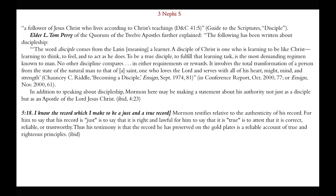Chapter 5, verse 18 — the phrase 'I know the record which I make to be a just and true record.' Mormon testifies relative to the authenticity of his record. For him to say that this record is just is to say that it is right and lawful; for him to say that it is true is to attest that it is correct, reliable, or trustworthy. Thus his testimony is that the record he has preserved on gold plates is a reliable account of true and righteous principles.